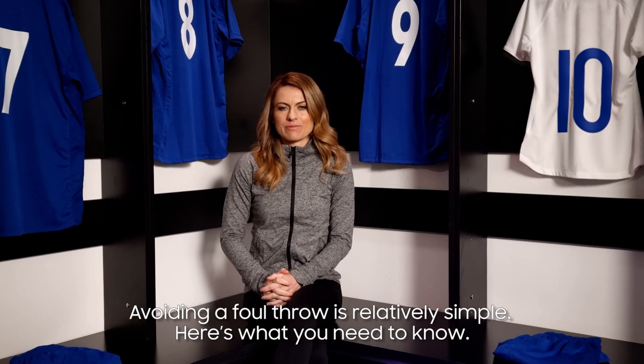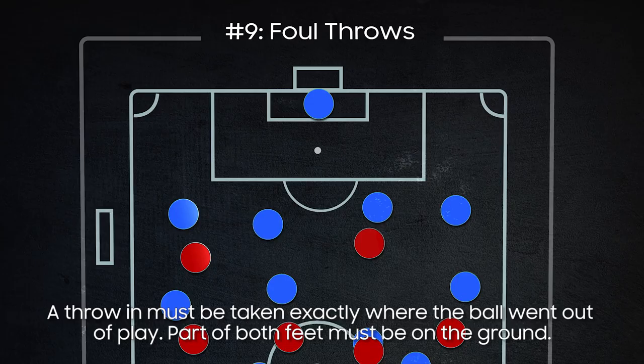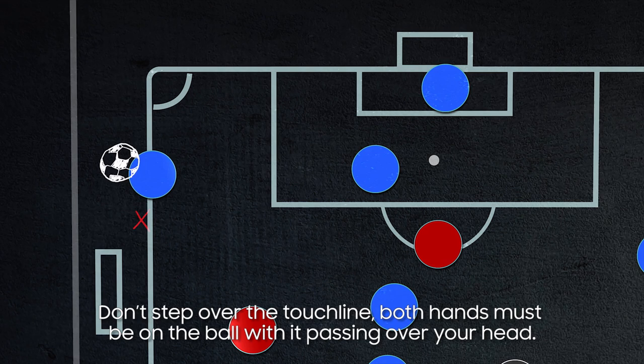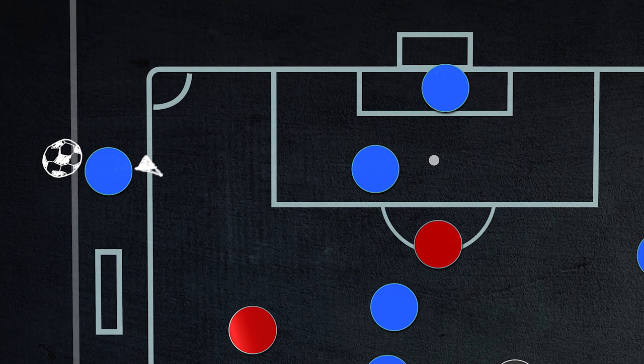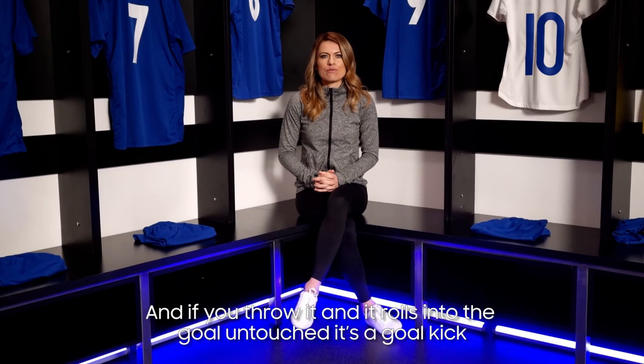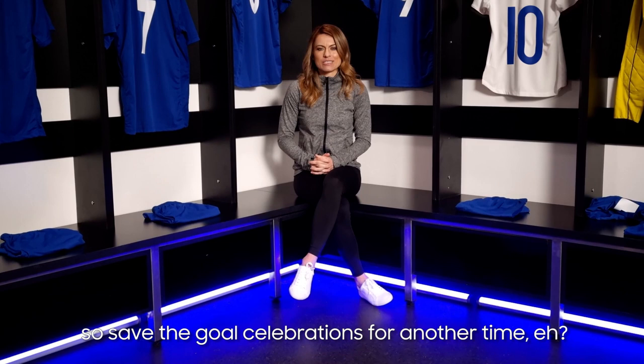Avoiding a foul throw is relatively simple. Here's what you need to know: the throw must be taken exactly where the ball went out of play; part of both feet must be on the ground; don't step over the touch line; both hands must be on the ball with it passing over your head; once thrown, the player who threw it can't touch it until it's touched another player; don't waste time; and make sure the opponents are at least two meters back. If you throw it and it rolls into the goal untouched, it's a goal kick — save the goal line celebrations for another time.